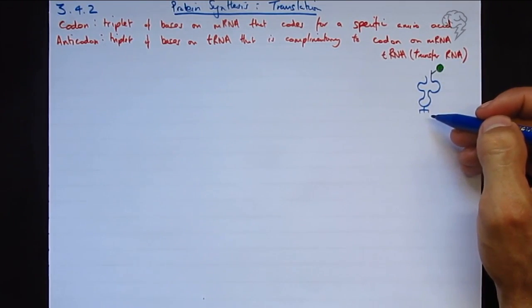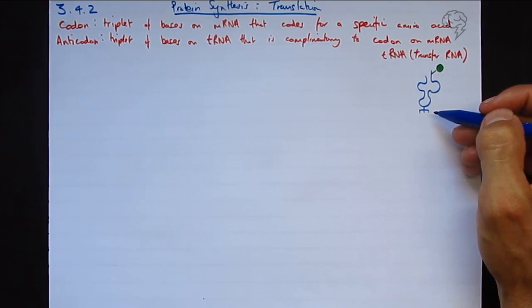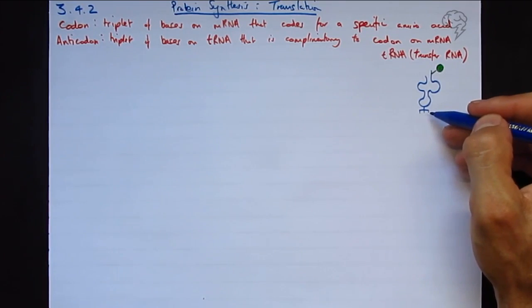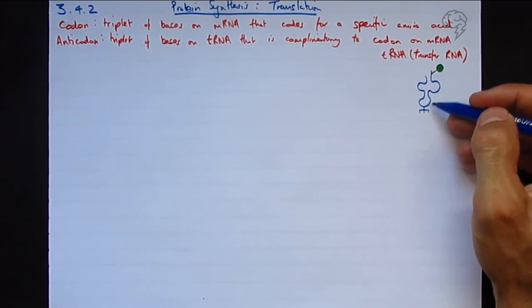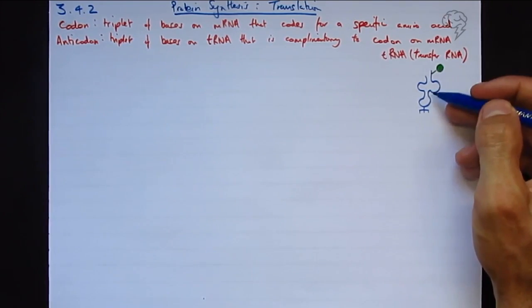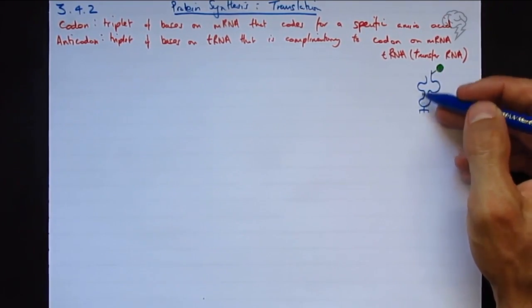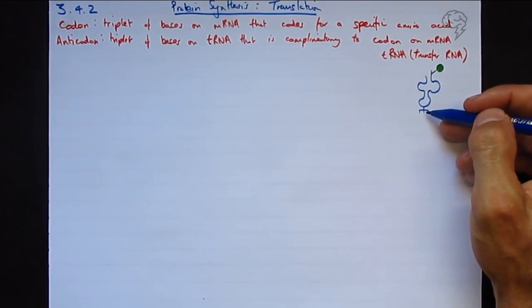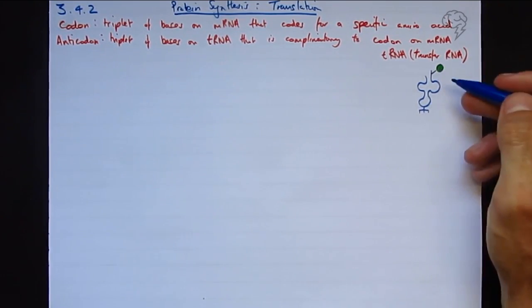So whatever the anticodon is, that is directly correlated to what the amino acid is. If this is a particular code, then this must be the same. The purpose of this is that the anticodon and the amino acid are linked—it's not random which amino acid this transfer RNA molecule is carrying.